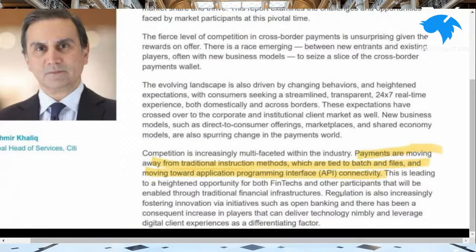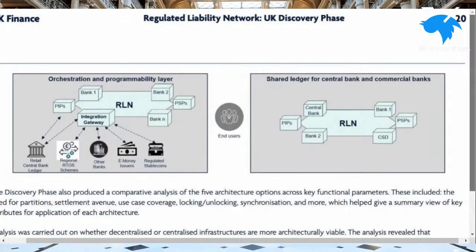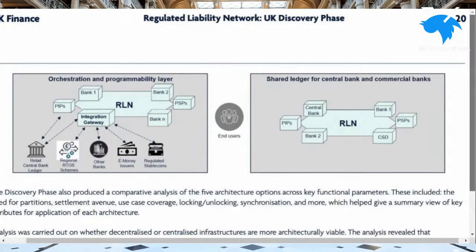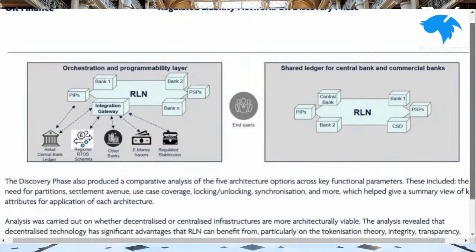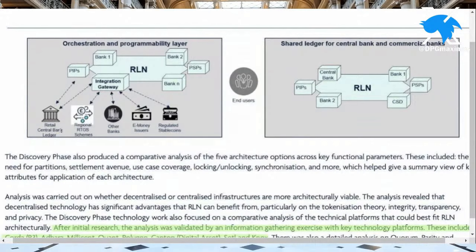Let me show you some examples. Whether or not you follow the RLN, you need to follow it to get a bigger picture. Here's the regulated liability network UK discovery phase — straight from UK Finance. Look at the orchestration and programmability layer of RLN. You can see the central bank ledger going to the integration gateway. We always talk about Quant's gateways. How about regional RTGS schemes, other banks — notice how they all connect to the integration gateway. We just talked about APIs. E-money issuers, regulated stablecoins — look at how many different banks are used through RLN.